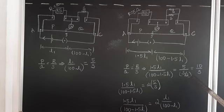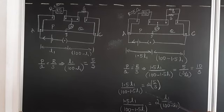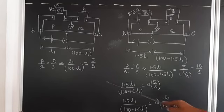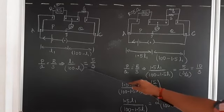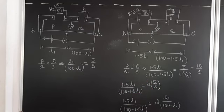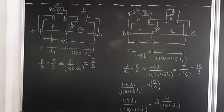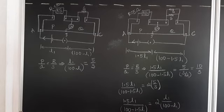Since S/2 in the denominator brings 2 to the numerator, we get 10/S. We can rewrite 10/S as 2 × (5/S). From the first case, 5/S = L1 / (100 − L1). Substituting: 1.5L1 / (100 − 1.5L1) = 2 × L1 / (100 − L1).